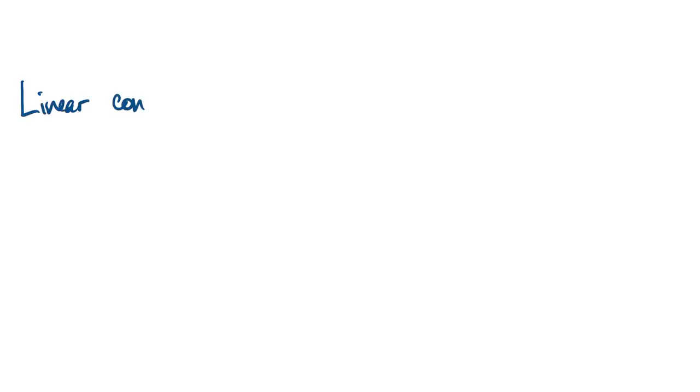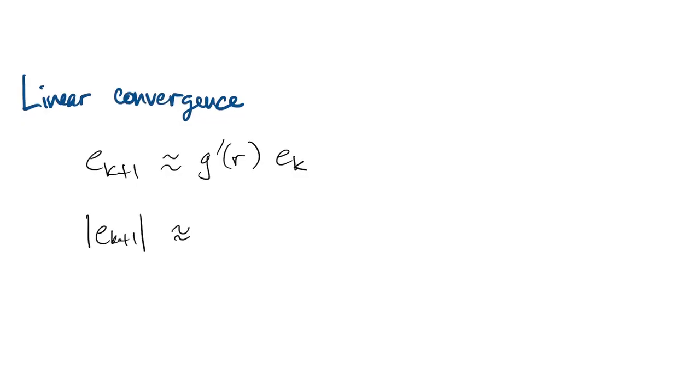This is what we call linear convergence. Ek plus one is approximately a constant times ek, where that constant is less than one in magnitude. We'll call that number sigma.